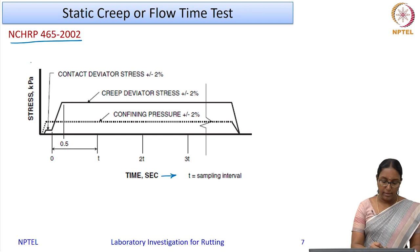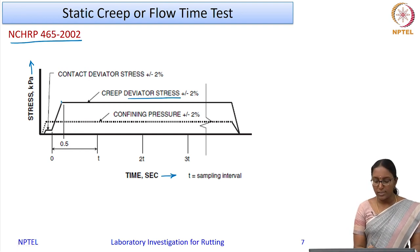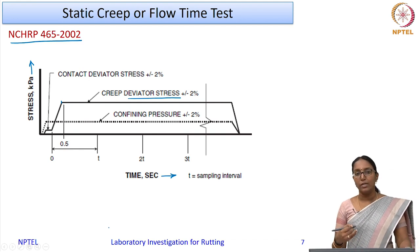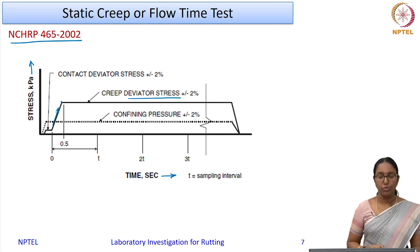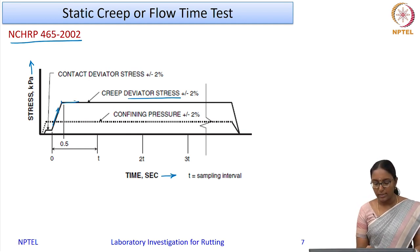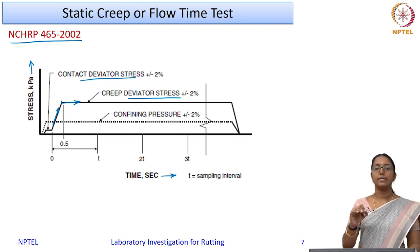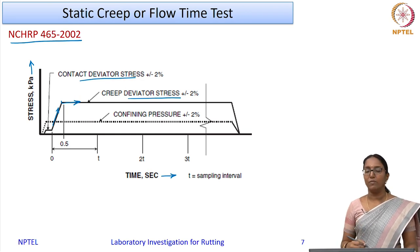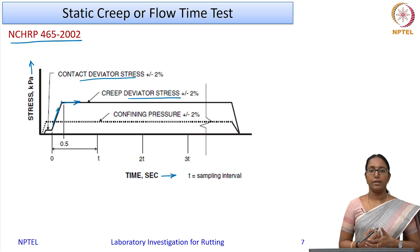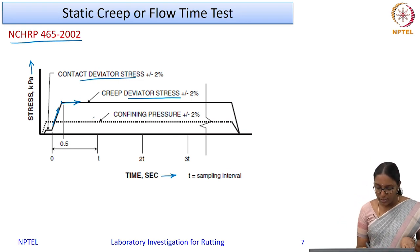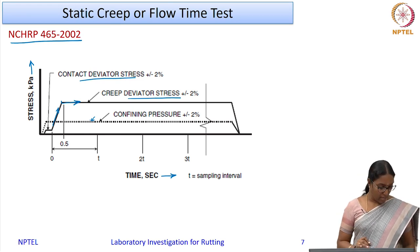The test protocol shows time on the x-axis and stress on the y-axis. A creep deviator stress is applied constantly on the specimen. Since it is difficult to apply a certain stress instantaneously, there is a ramp-up time to reach the required deviator stress, after which it is kept constant. A seating or contact load of 2 to 5% of the deviator stress is applied initially. The test can be conducted in confined or unconfined conditions; if confined, a confinement pressure is also applied as a static compressive load.